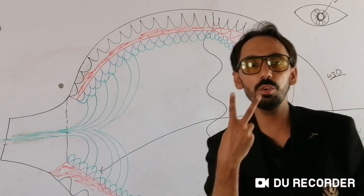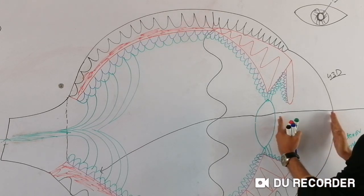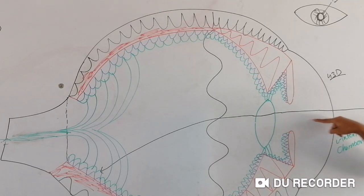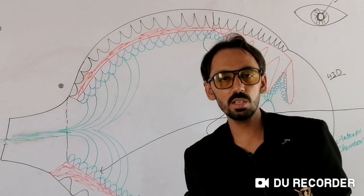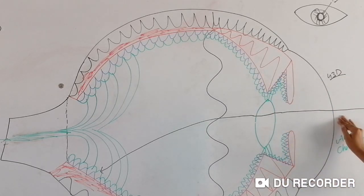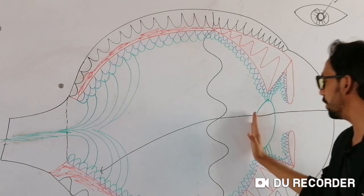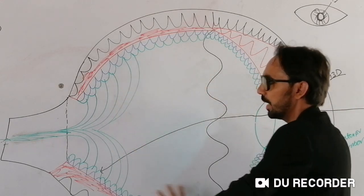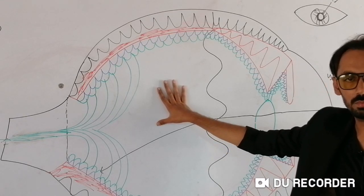We have three different chambers and two different segments of the eyeball. The anterior segment is the space from the posterior surface of the cornea to the anterior surface of the crystalline lens — filled with aqueous humor. The posterior segment is the space from the posterior surface of the lens to the anterior surface of the retina — the space occupied by the vitreous humor, the gel-like structure.